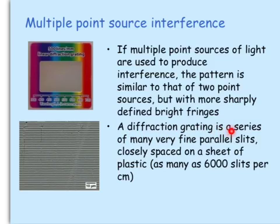A diffraction grating is a series of many very fine parallel slits, closely spaced on a sheet of plastic, and it can be as many as 6,000 slits per centimeter, or 6,000 sources per centimeter.